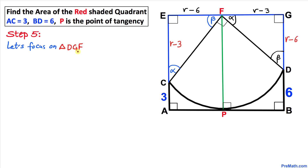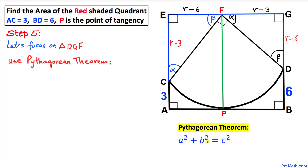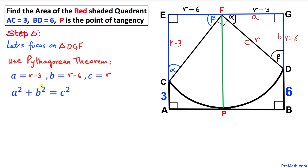Now let's focus on triangle DGF. Since this is a right triangle, we are going to use the Pythagorean theorem: a² + b² = c². In this triangle, the longest side FD is c, the horizontal leg FG is a, and the vertical side is b. So a is r minus 3, b is r minus 6, and c is the radius r.